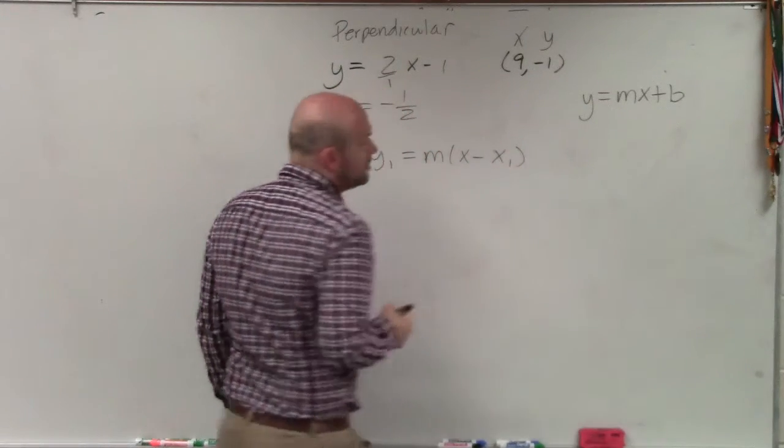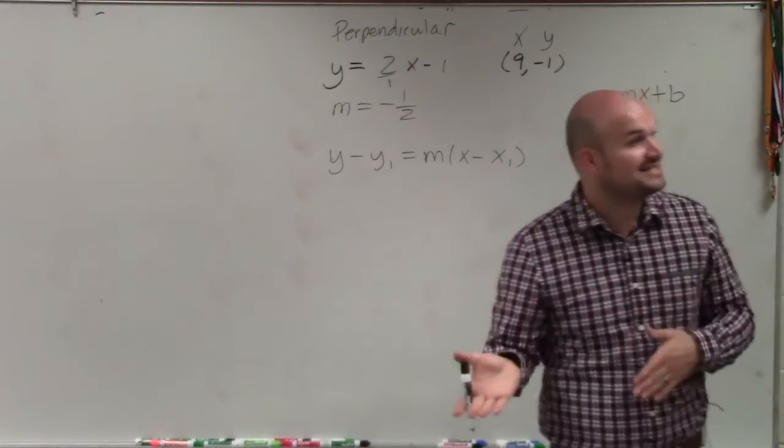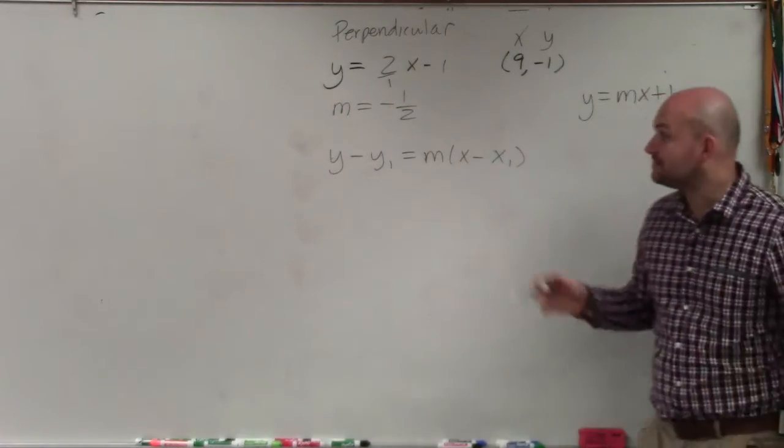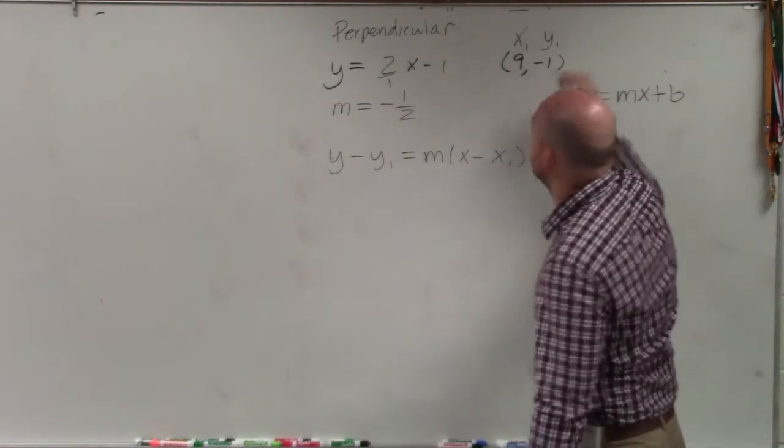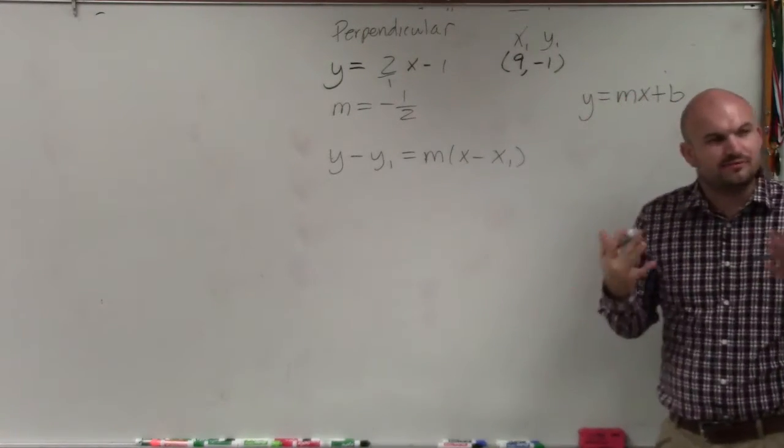And basically, what point-slope allows us to do is when we're given a point and a slope, we can plug it in. So basically, I'm going to plug in. I'm going to call this x1 and y1. It's just a different way to label the points.